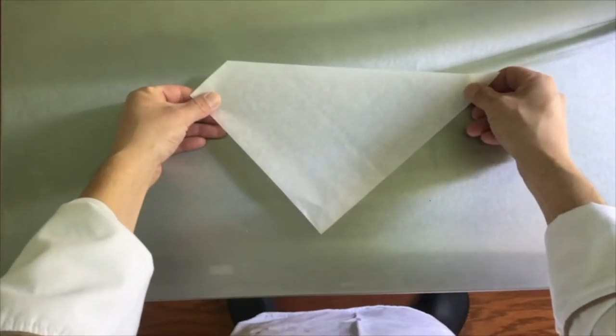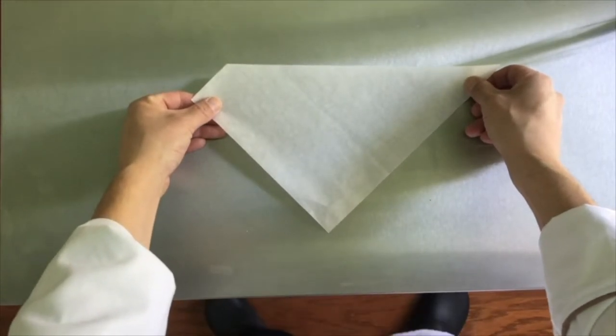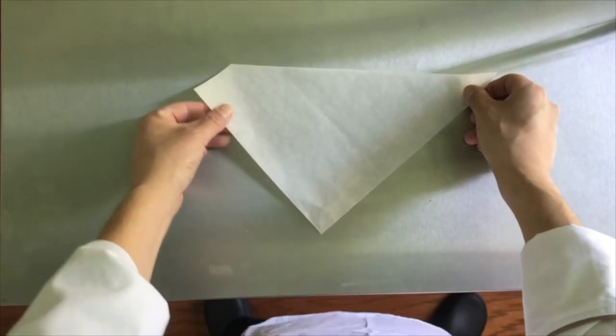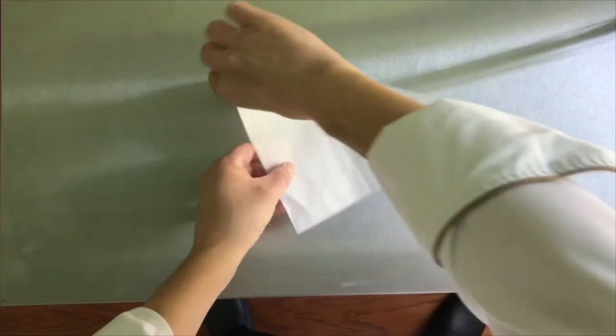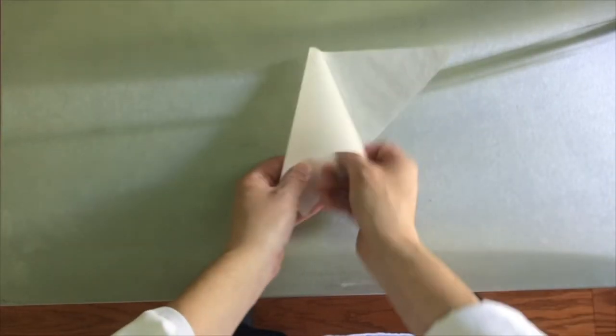Starting with the longest edge facing away from you and the point facing towards yourself, roll the left corner creating a point at 12 o'clock. This is the tip of the parchment cone.